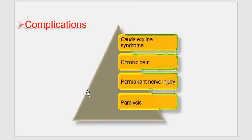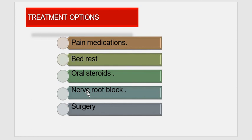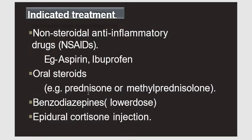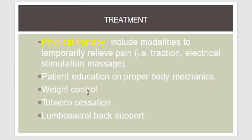Complications can include cauda equina syndrome, chronic pain, permanent nerve injury, or paralysis. Treatment options include pain medication, bed rest, corticosteroids, nerve root blocks, and surgery. NSAIDs such as aspirin and ibuprofen, oral steroids such as prednisolone or methylprednisolone, benzodiazepines in low dose, and epidural injections are used.